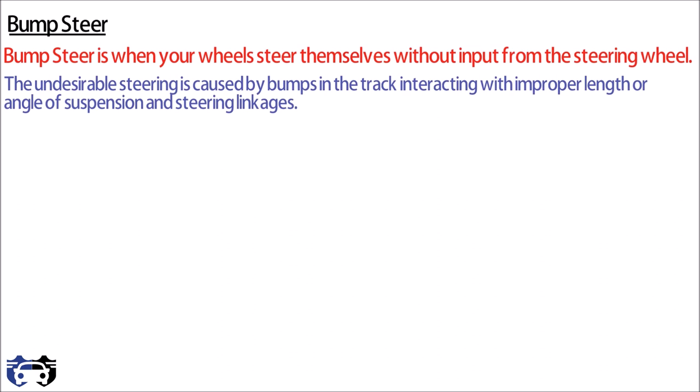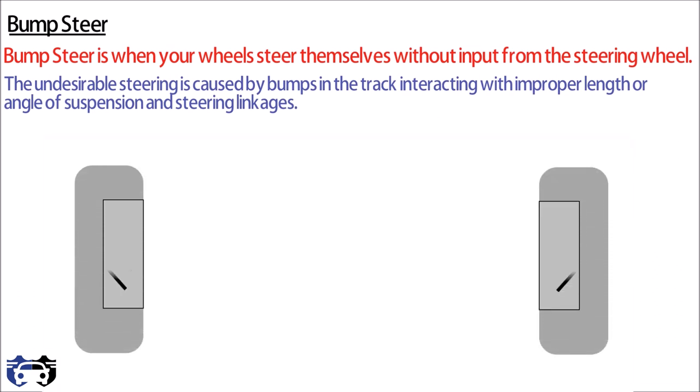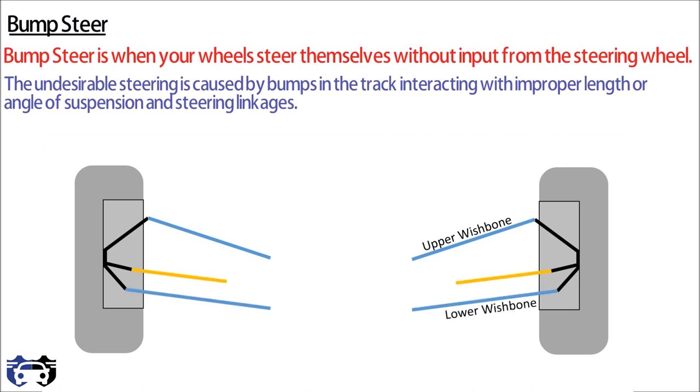Here I am taking double wishbone suspension geometry for understanding bump steer. These are the front left and right tires with left and right knuckle. This blue line is showing upper wishbone and the lower line is showing the lower wishbone of suspension geometry.